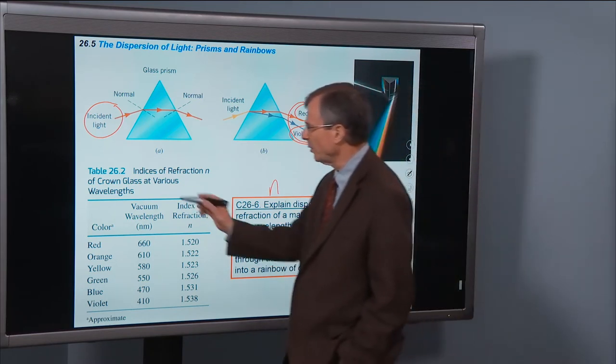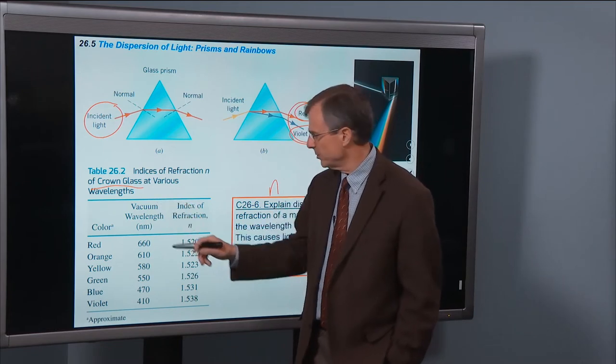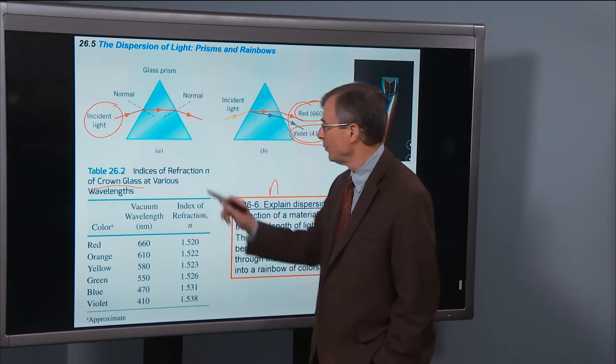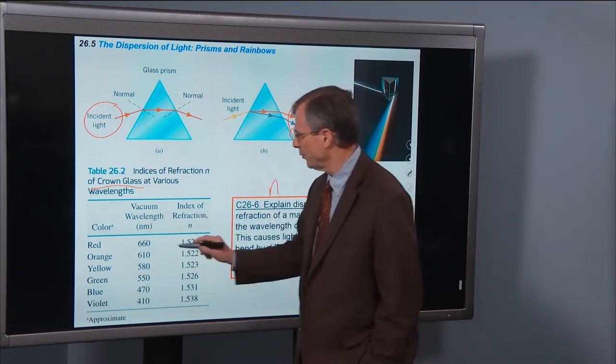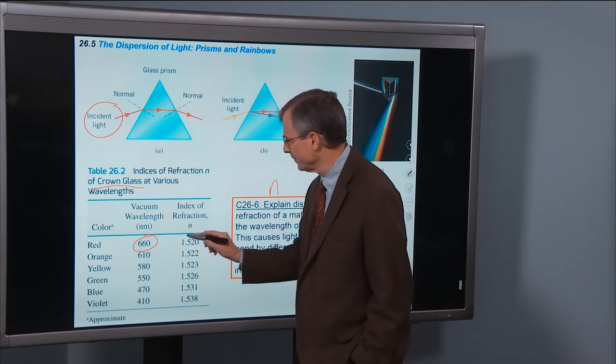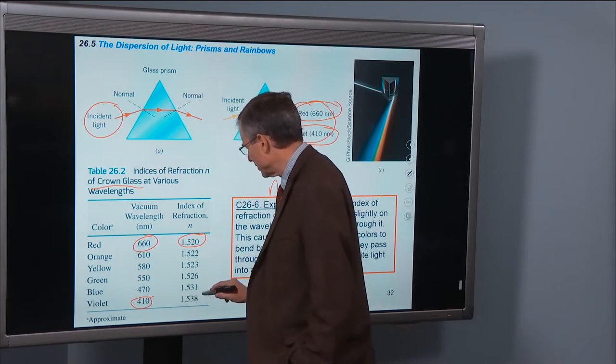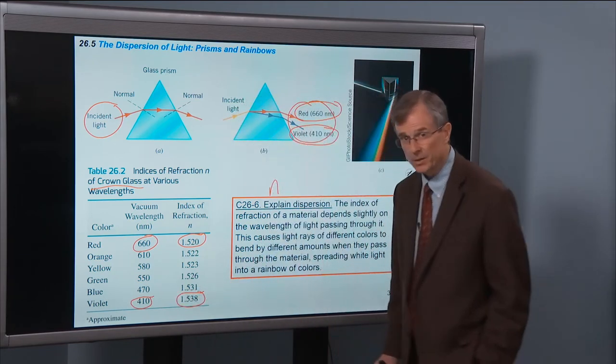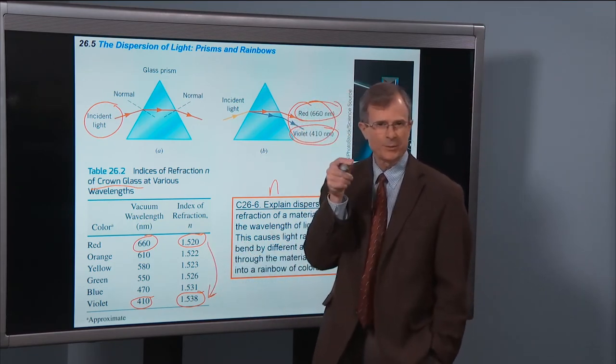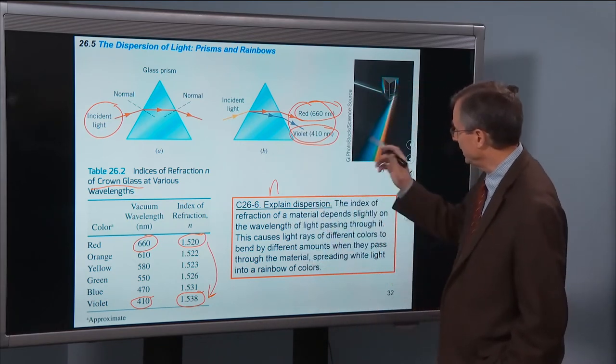So this is an example for crown glass. This is the wavelength of the light passing through that glass and the index of refraction of the material for that wavelength. So for red light of 660 nm, the index of refraction of crown glass is 1.520. Whereas for violet, the index of refraction is higher. Meaning a higher index of refraction means that those light rays are going to get bent more, which is exactly what we see in the video and in this example.